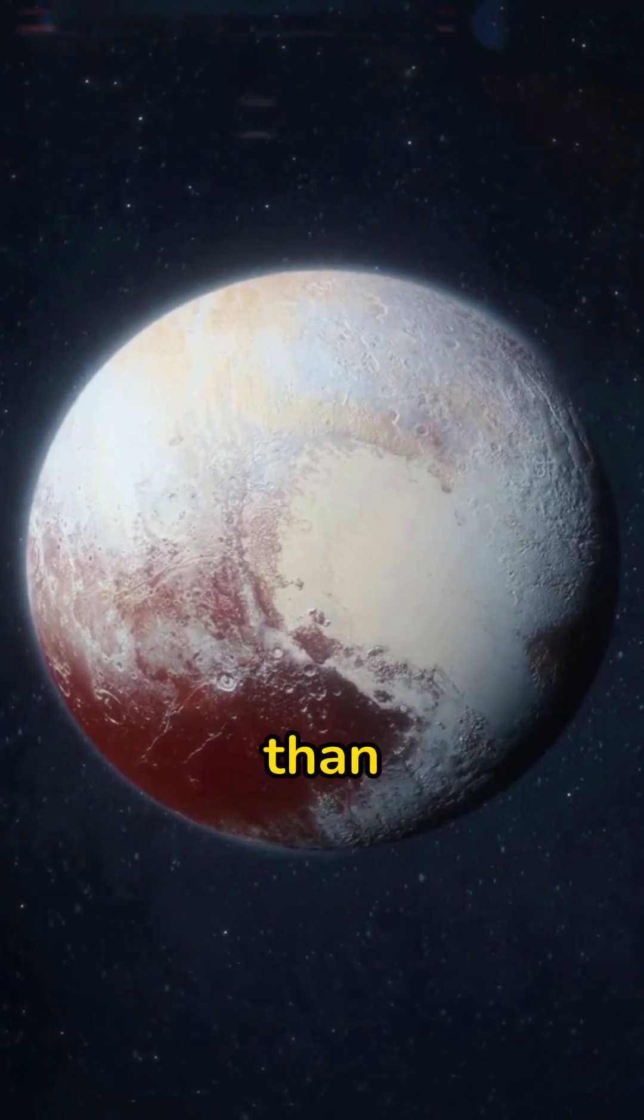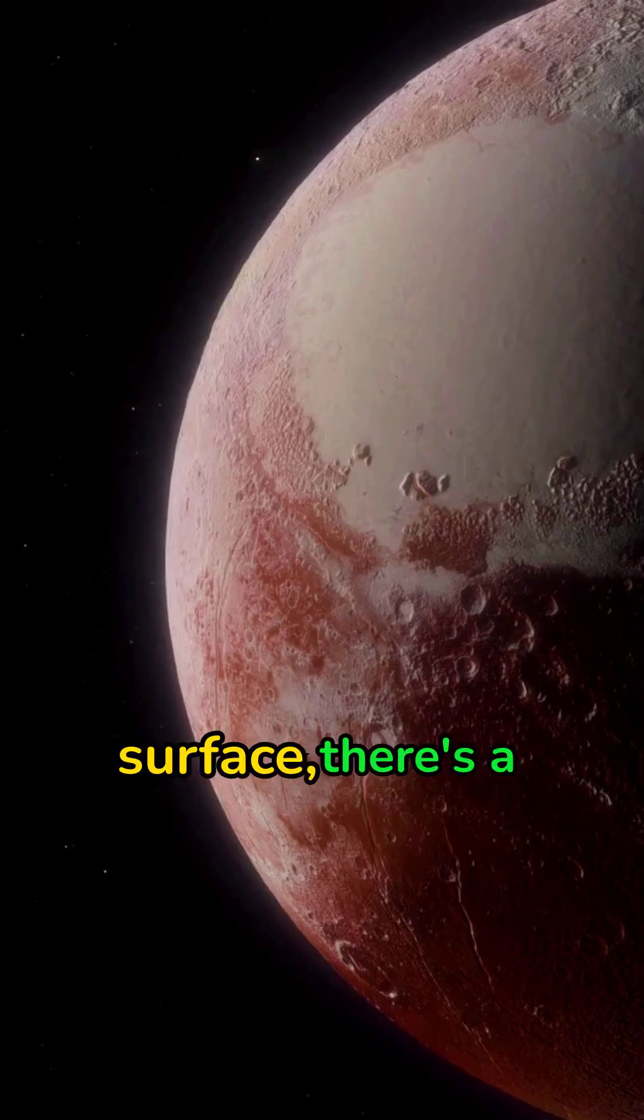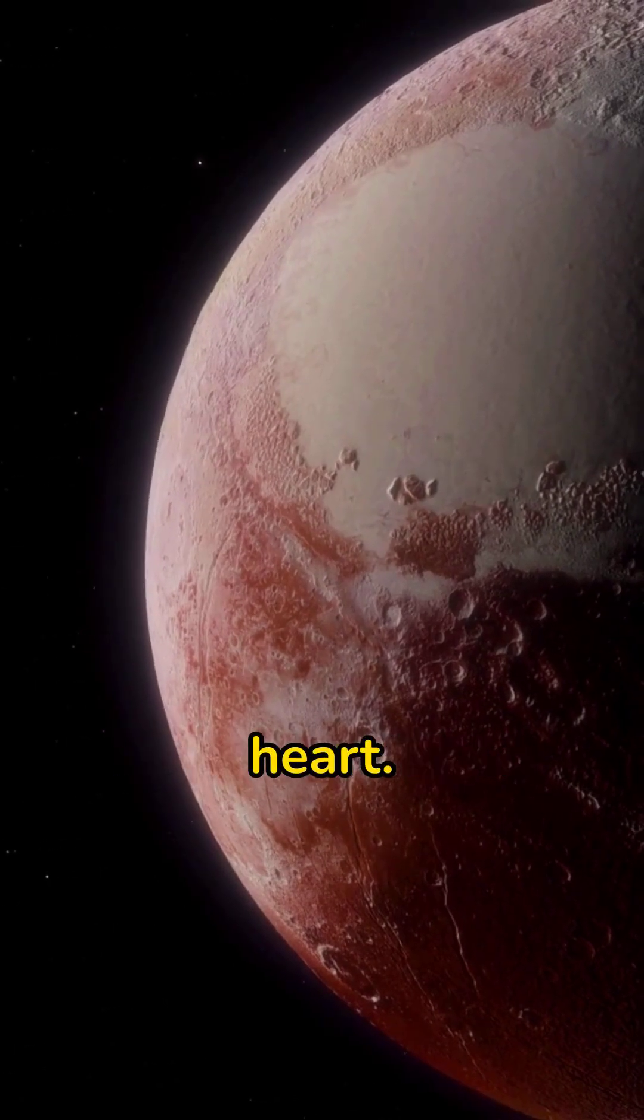Fact 1. Pluto has a heart-shaped glacier bigger than Texas. On Pluto's surface, there's a huge, bright area shaped like a heart.